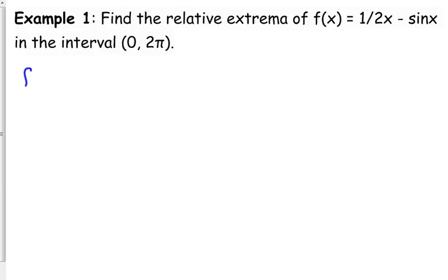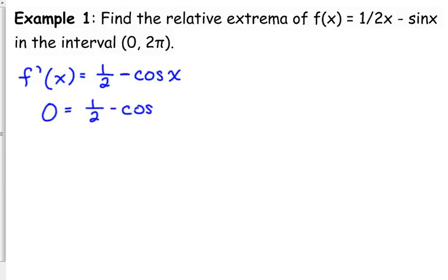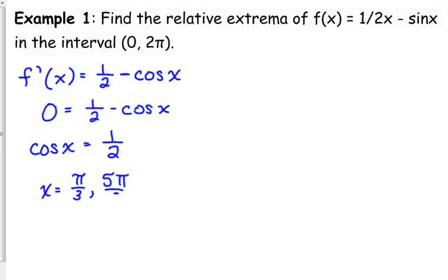We've got to take our derivative because if we're finding extrema, we've got to find a critical point. Critical points come from where the derivative is equal to zero. The derivative of (1/2)x is 1/2; the derivative of sine is cosine, and there was a minus in front of it. Setting the derivative equal to zero, we add cosine to get cosine x = 1/2. That happens in the first quadrant at π/3 and in the fourth quadrant at 5π/3. Those are our two critical points.